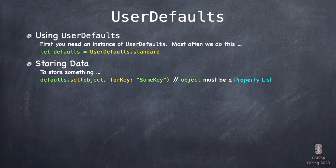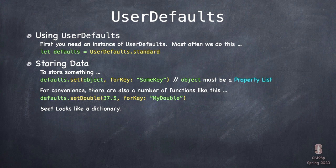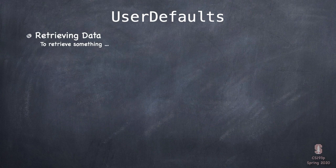To store data, use the function `set(_:forKey:)`. The object argument has to be a PropertyList — an int, array of strings, or anything made only of those types. The `forKey` is just some random string, like a key in a dictionary to look it up later. For convenience, there are also things like `setDouble(_:forKey:)` — that's syntactic sugar, no different than `set(37.5, forKey:)`.